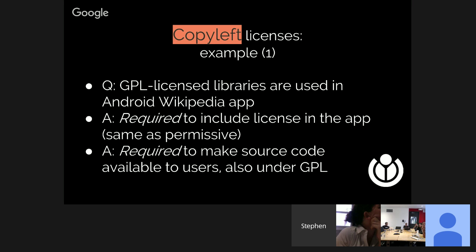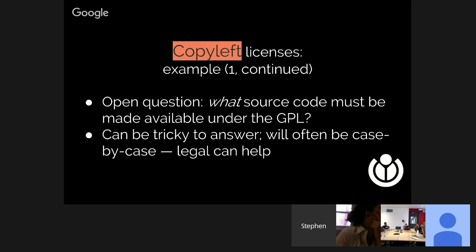If we include a GPL licensed library inside of an application that we distribute in binary form, with a copyleft license we're required to include the license in the app — same as permissive — but we're also required to have the source code available to users and release it under the same license. That is an additional requirement that is sometimes burdensome. The question of exactly what must be made GPL — what the viral clause applies to — can get tricky. I'd recommend talking with the legal team to understand exactly how this works if you have questions about combining the GPL with other licenses.